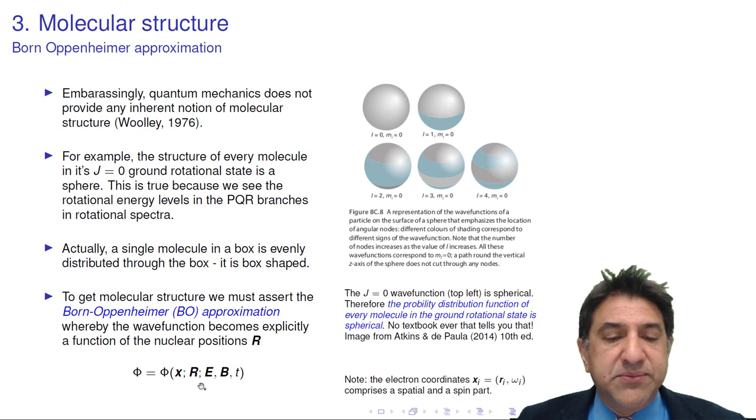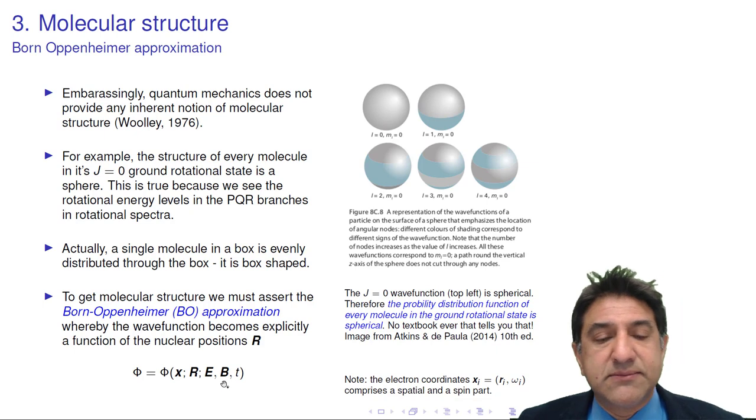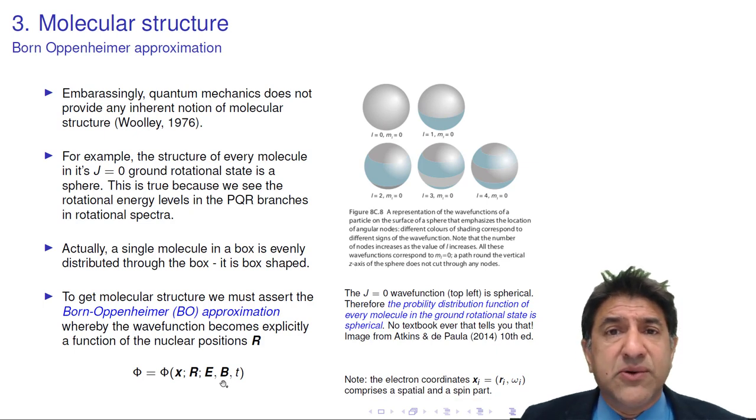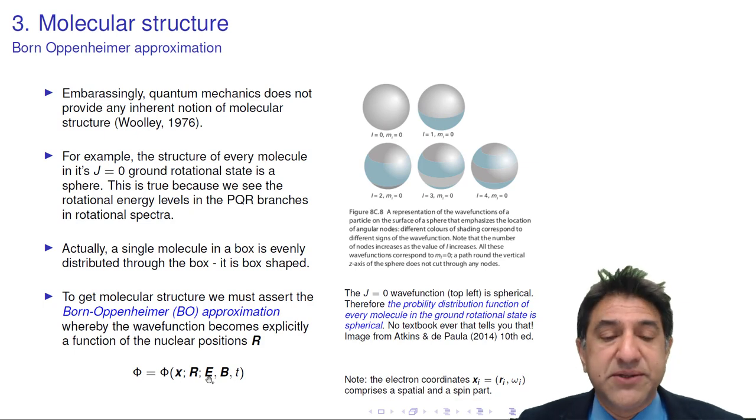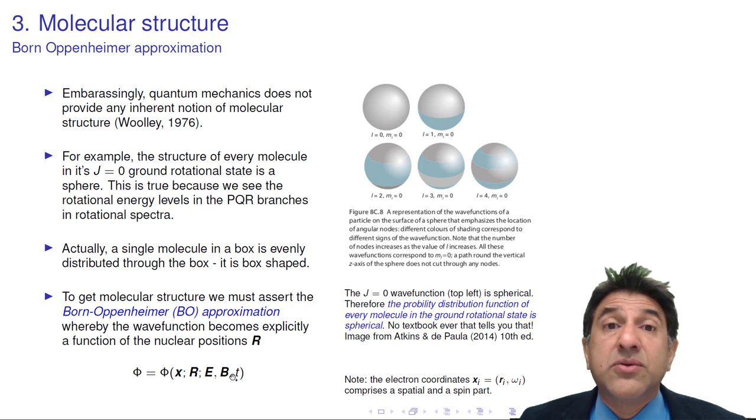The wave function may also be a function of applied electric fields and magnetic fields. In some cases it's not really practical to include all the atoms on a pair of electrical plates that you might introduce around your gas molecule. So we just say the main thing that the wave function depends on is the electric field applied by those plates, or the magnetic field applied by the NMR machine on your solution.